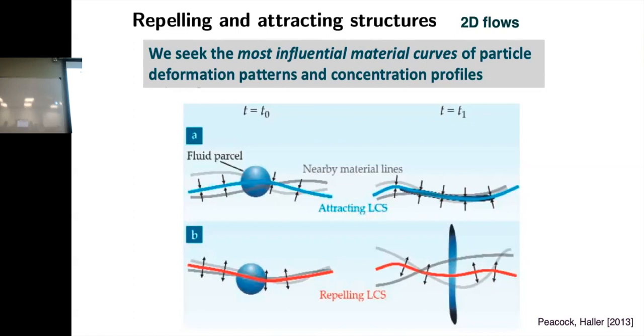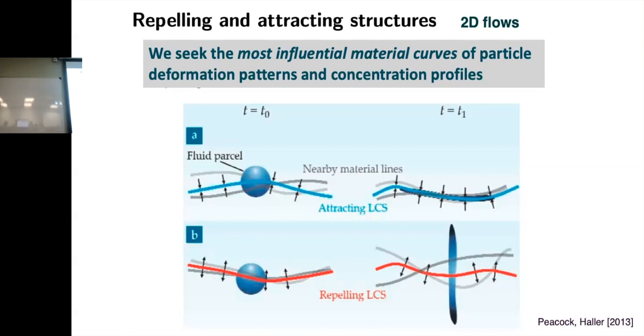What we're looking for, what is technically called a Lagrangian coherent structure, is the most influential material surface in a fluid, in the sense that the pattern of particle deformation and concentration profiles seem to be dictated by this template of material surfaces. So in a 2D flow, we just have material lines. This is showing an idea of what we would call an attracting LCS, attracting Lagrangian coherent structure. So if you have a fluid parcel that's straddling this, it'll spread out along it. So parcels get attracted.